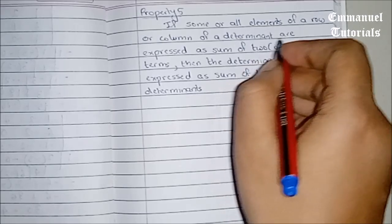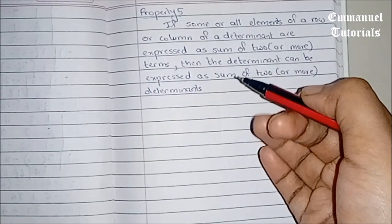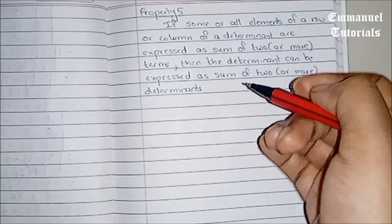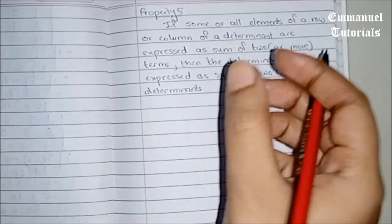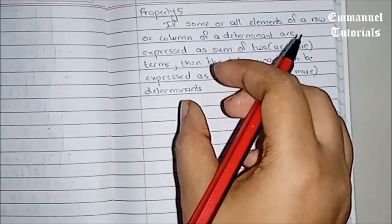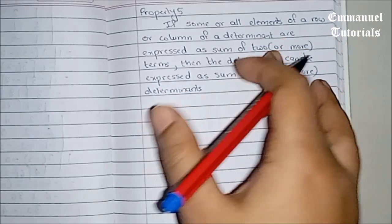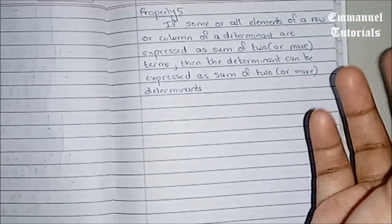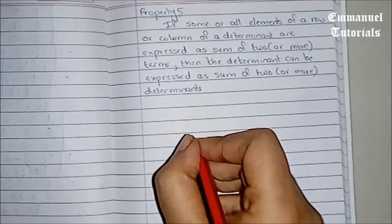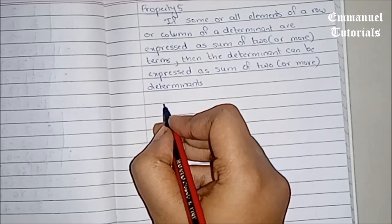So let's see word by word. If some or all elements of a row or a column, means any row or any column or more than one row or more than one column, if each of the element can be expressed in the form of a sum of two numbers, then it can also be represented in the form of sum of two determinants.